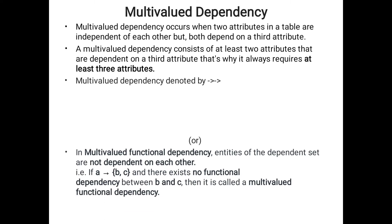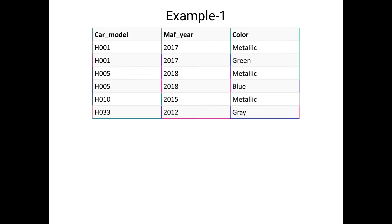Multi-valued dependency is denoted by a double arrow. Another definition: the entities of the dependent set are not dependent on each other. If A implies B, C — then B and C are both dependent on A, but B and C are independent of each other. This type of dependency is called multi-valued dependency.